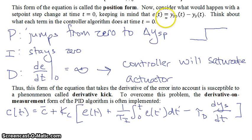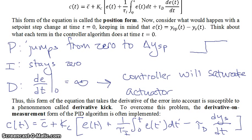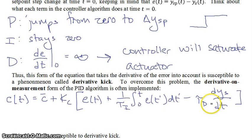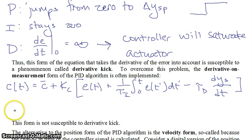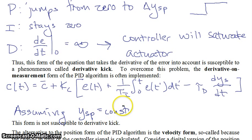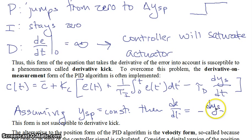What you see here is that when you look at the error and you're assuming that the setpoint is not changing over time, then you're replacing dE/dt in the original positional form algorithm with minus dYs/dt. So you're assuming the setpoint doesn't change in time and ignoring it. That way, when it does change suddenly, the derivative will no longer be infinity and that change will not affect this derivative. Assuming y_setpoint equals constant, which it usually does, then dE/dt equals minus dYs/dt. In most other cases this is exactly the same as the positional form.